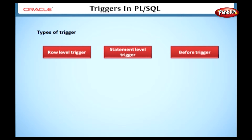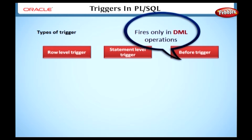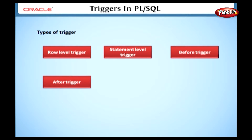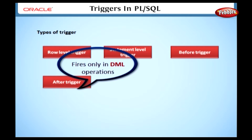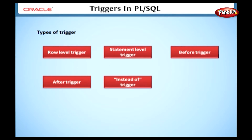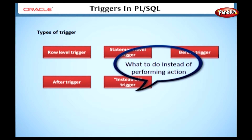A Before trigger runs the trigger action before the triggering statement, and this type of trigger fires only in DML operations. An After trigger runs the trigger action after the triggering statement, and this type also fires only in DML operations. An Instead Of trigger is used to tell Oracle what to do instead of performing the actions that invoked the trigger.